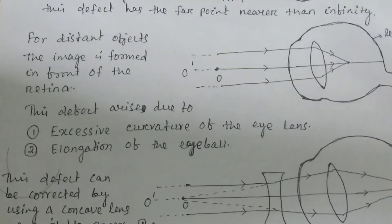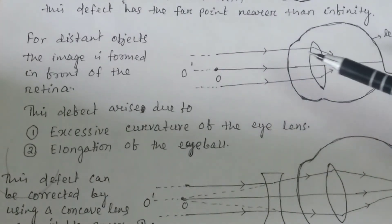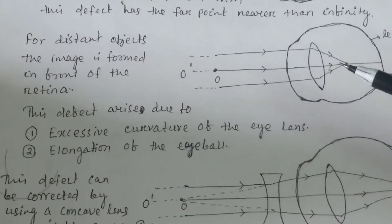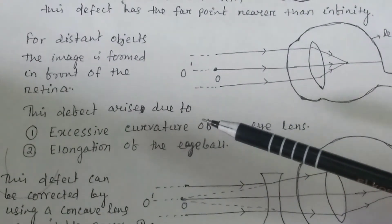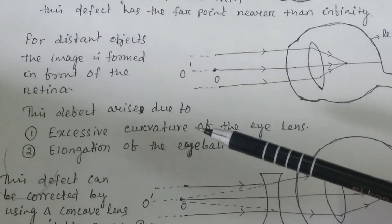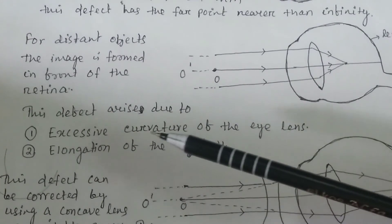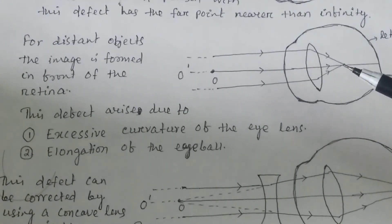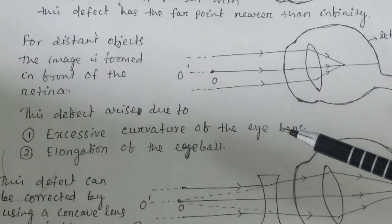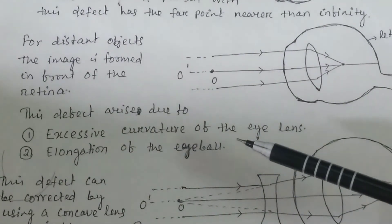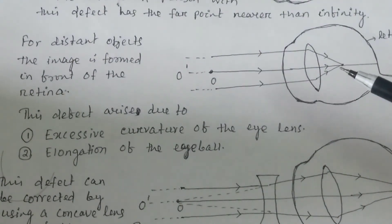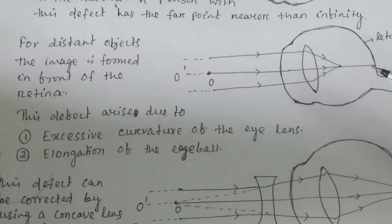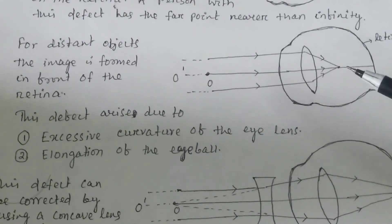The rays of light coming from infinity form an image in front of the retina. This defect arises due to two causes. Number one: excessive curvature of the eye lens — when the curvature increases, its focal length decreases. The second cause is elongation of the eyeball. If the eyeball size is increased, the image formation point will be shifted from the retina to a point in front of it.